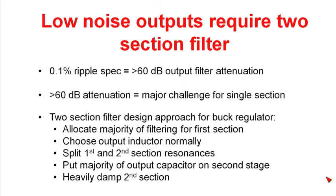What I've found that works in designing a two-section filter is to take this approach. I'll allocate the majority of my filter into the first section. I'll normally choose my output inductance value. What that normally means is I'm usually working with a buck regulator, and I'll choose the peak-to-peak ripple current in the output inductor to be 20% or 30% of the DC current.